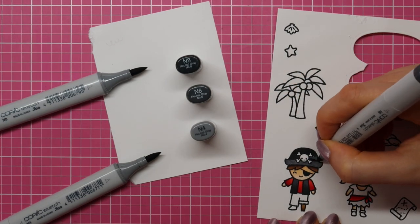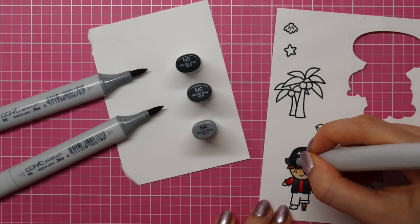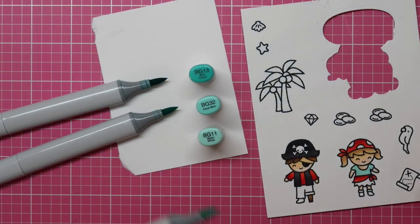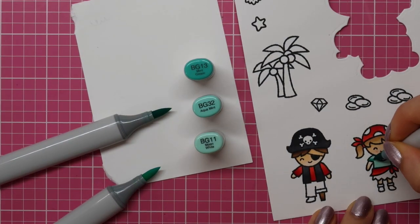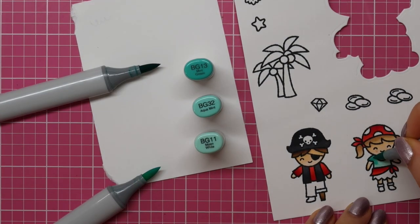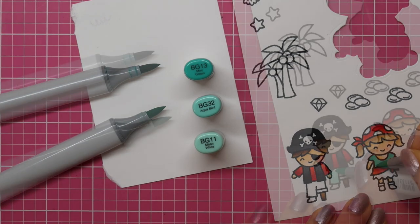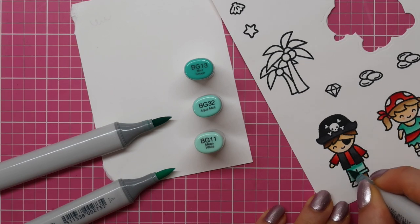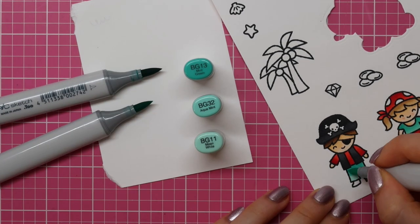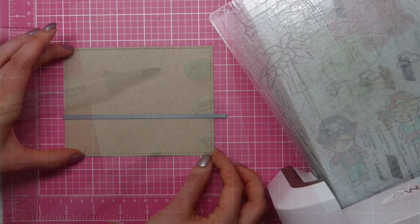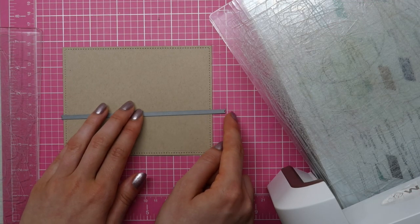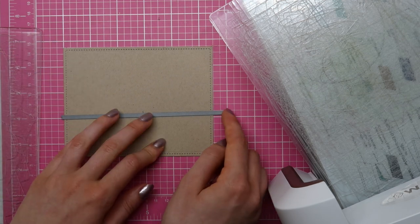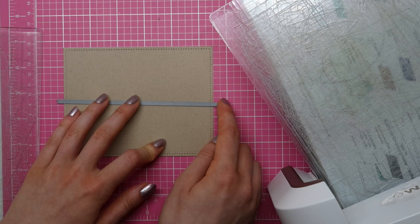I am just going to show you very quickly how to color their outfits. For the hat I am using N8, N6 and N4. And then for their turquoise outfits I am using BG13, BG32 and BG11. I just love that cool color together with the red. I think it's such a beautiful color combination. I am using the same colors for his trousers.